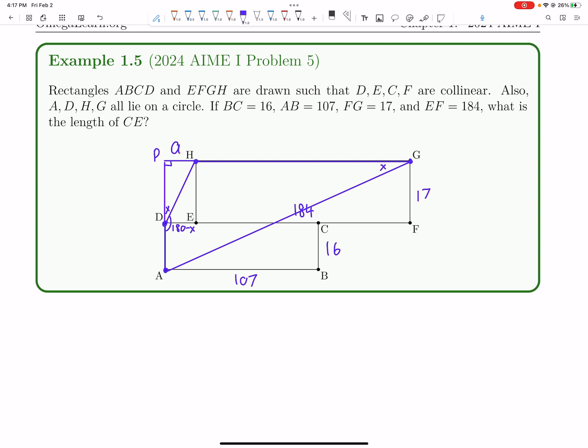So let's say PH has a length of A. HG has a length that's the same as EF, so 184. PED has a length that's the same as HE, or GF, which is just 17.